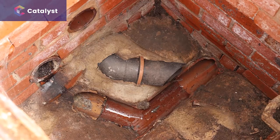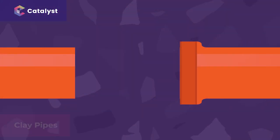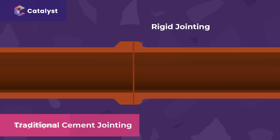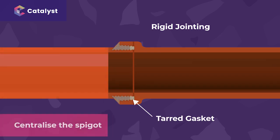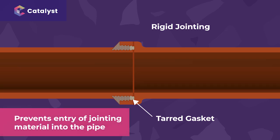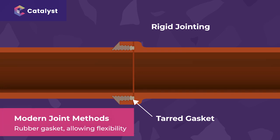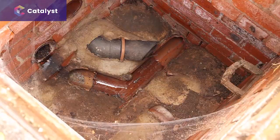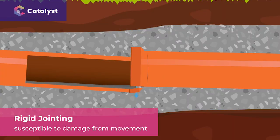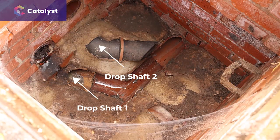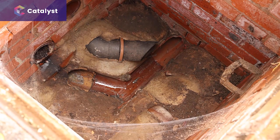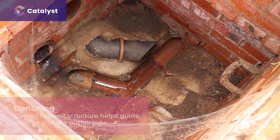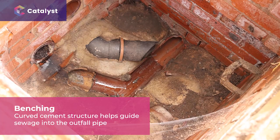A CCTV investigation is carried out to assess the pipe condition. On this site we have clay pipes with a rigid jointing method of installation. Traditional cement jointing used a tarred gasket to centralise the spigot in the socket and prevent entry of jointing material into the pipe. More modern jointing methods allow a rubber gasket to provide some flexibility in clay pipework. The rigid jointing was susceptible to damage from movement. The manhole has two backdrop shafts entering it, consistent with the drainage engineer's initial assessment. One drop shaft appears to have been repaired at some point as it has a plastic pipe coming over the top of the benching — the curved cement structure that helps guide sewage into the outfall pipe.